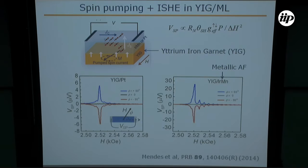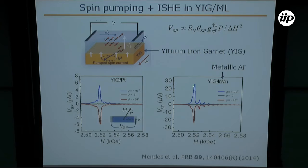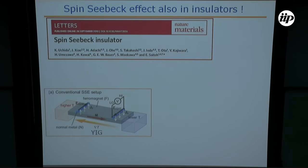We see a few small peaks corresponding to standing spin waves. Since the linewidth is small, the standing spin waves are visible. If we use iridium manganese instead of platinum, we actually see more pronounced spin wave peaks, and this is a very efficient system. YIG and other metallic materials show larger voltages — not because the spin Hall angle in iridium manganese is larger, but because the resistivity of iridium manganese is larger than that of platinum.